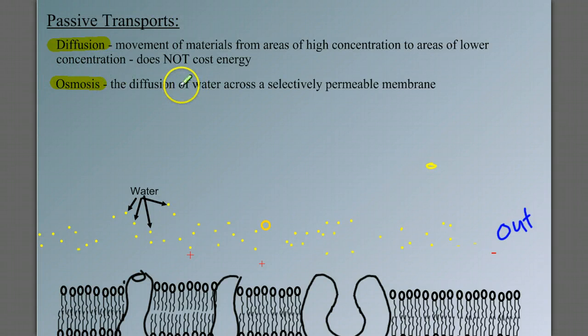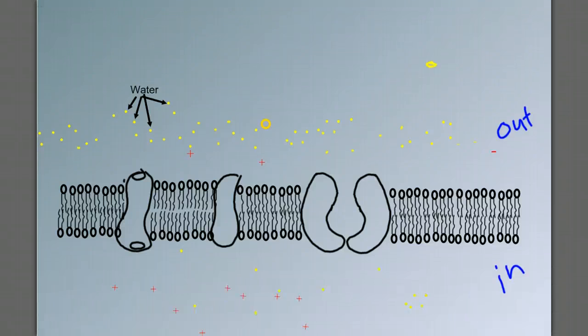Osmosis is the diffusion of water across a selectively permeable membrane. It's a very specific definition. And since it's diffusion, it's by definition passive. It's moving down the concentration gradient.